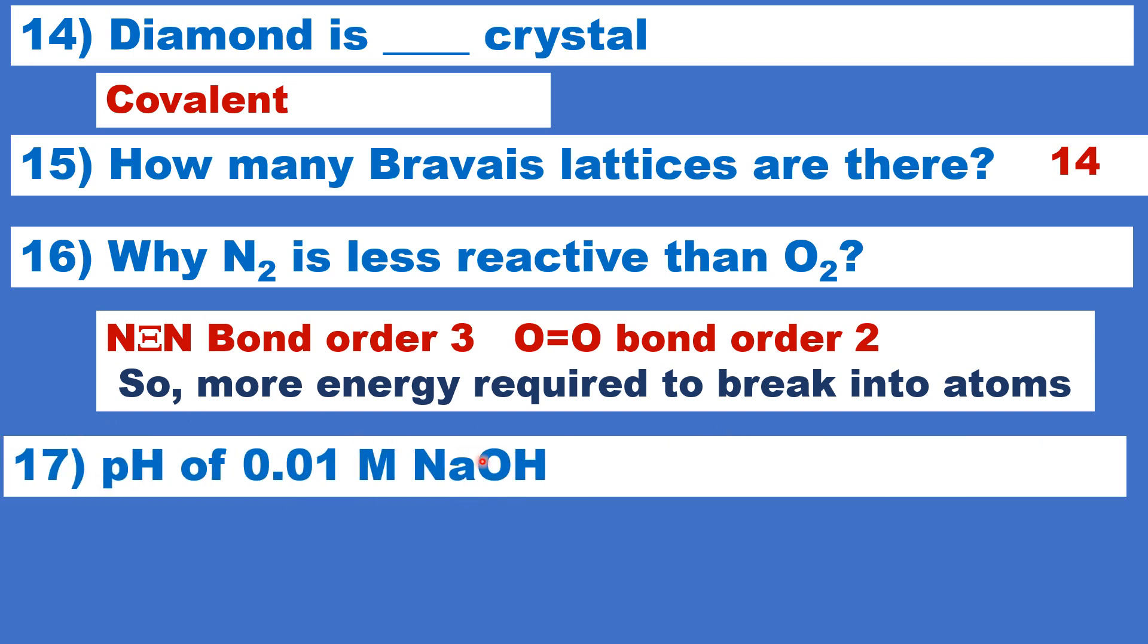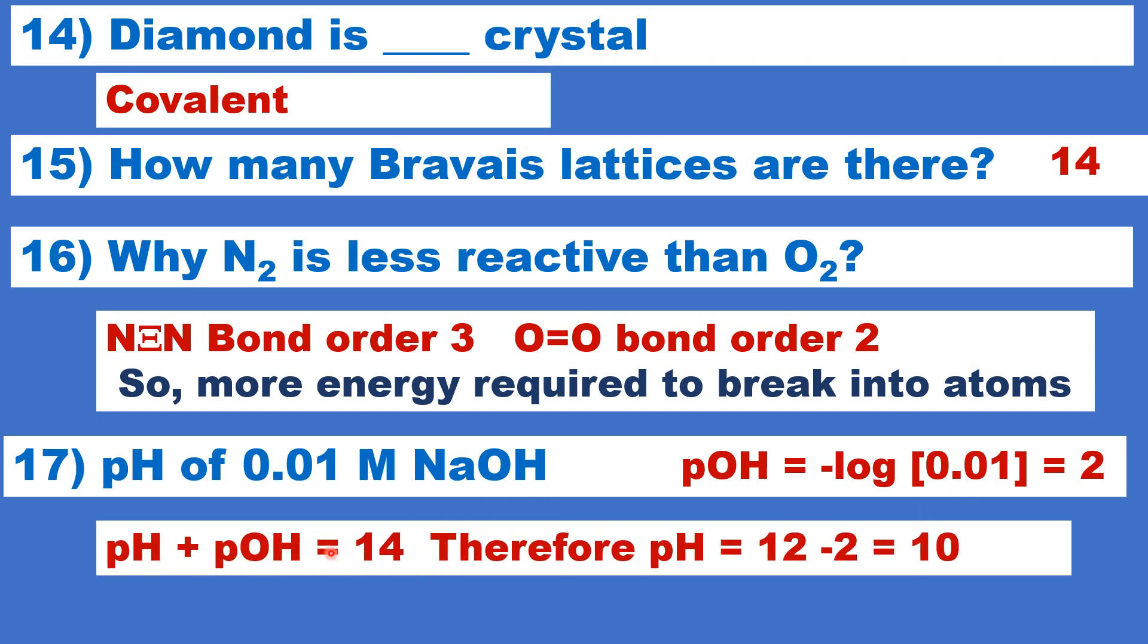What is the pH of 0.01 molar NaOH solution? Let us first calculate pOH equal to log to the base 10 of OH- ion concentration. It is completely dissociated. It is a strong electrolyte. It is completely dissociated. So, log 0.01 that is equal to 1 times 10 power minus 2. It will come here. So, minus minus plus 2. And the question is pH not pOH.